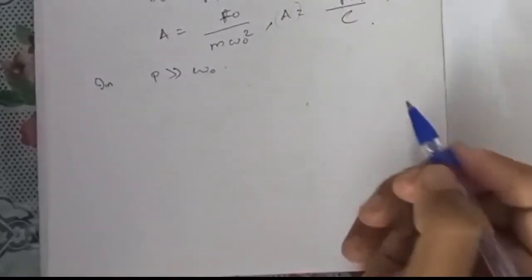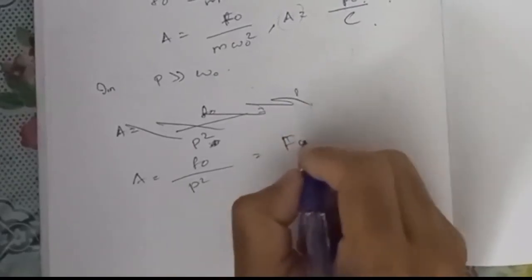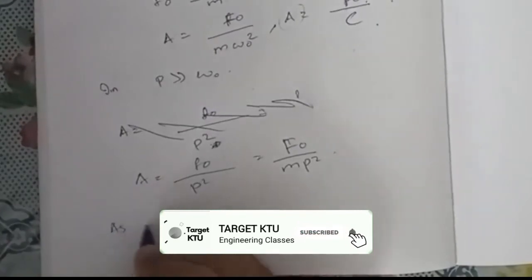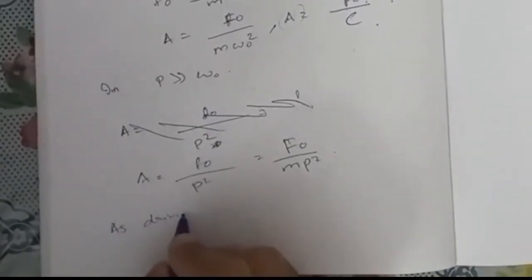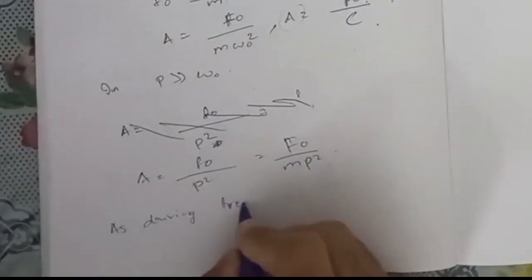When the driving frequency P is greater than omega_0, and we neglect damping, then A equals f0 divided by p squared, that is f0 divided by m times p squared. As the driving frequency increases, amplitude decreases. That is amplitude resonance.